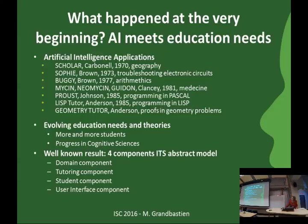I want to explain, roughly speaking, what happened at the very beginning of the ITS field. Artificial intelligence researchers met educational researchers and cognitive science researchers. The first group thought AI was applicable to education. The other group had made progress in cognitive sciences and learning theories. And there was also a societal need—more and more students and a need for proposing new solutions.